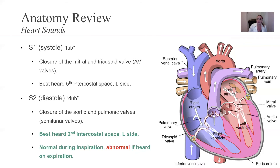It's important for you to understand S1, S2, S3, and S4 sounds. S1 is your systole, your lub — it's the closure of the mitral and tricuspid valve. You have to know that. Best heard at the fifth intercostal space on the left side. Unlike S2, which is your diastole, it's your dub — the closure of the aortic and pulmonic valves, your semilunar valves. Make sure you know S1: closure of the mitral and tricuspid valve, AV valves. Put a little star next to your notes on that one.